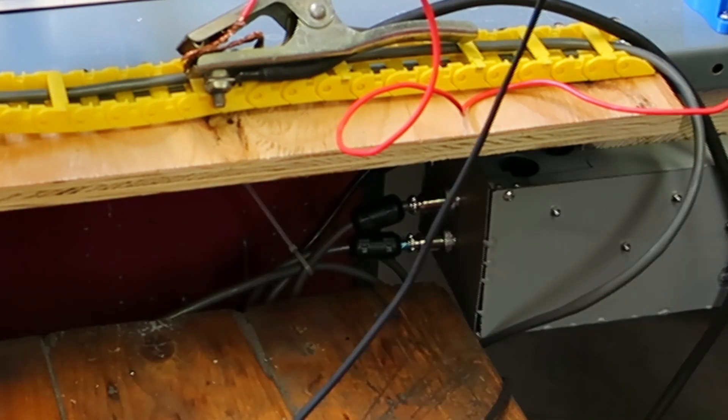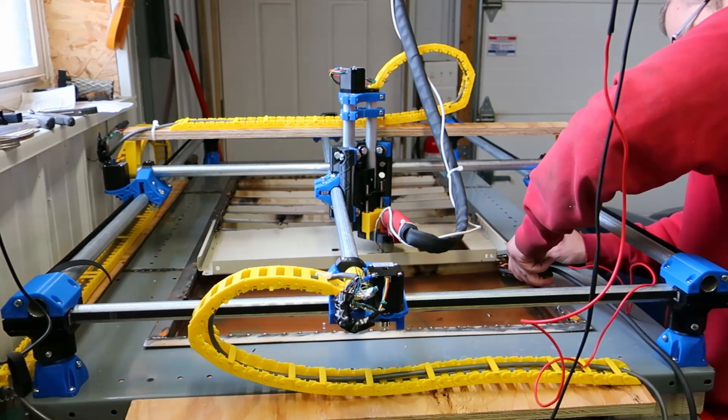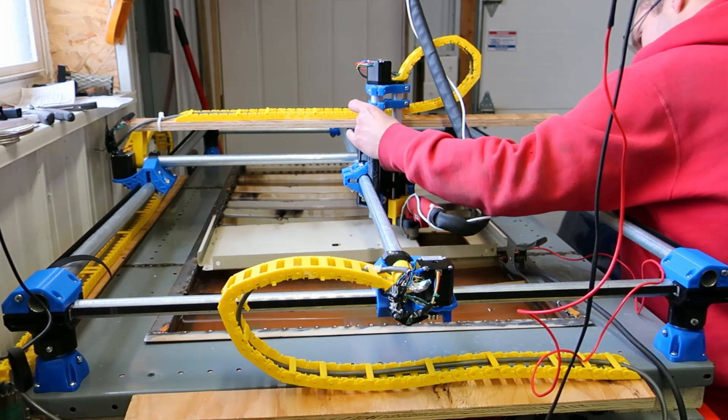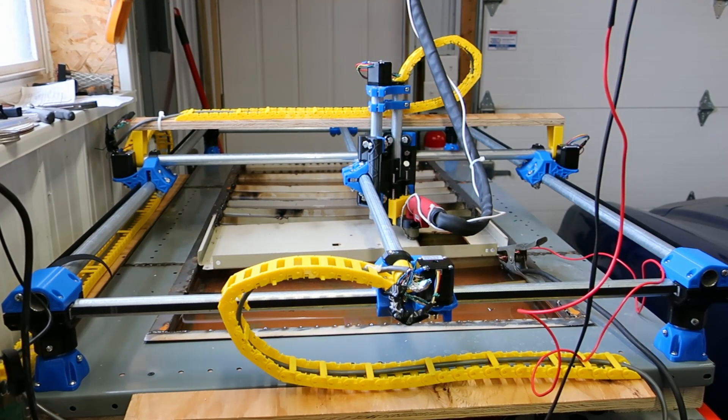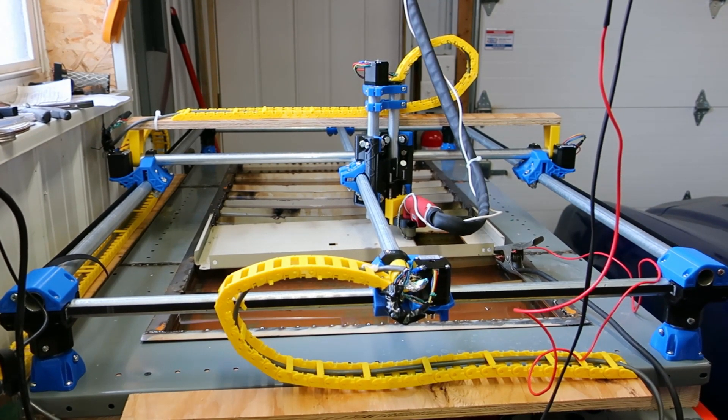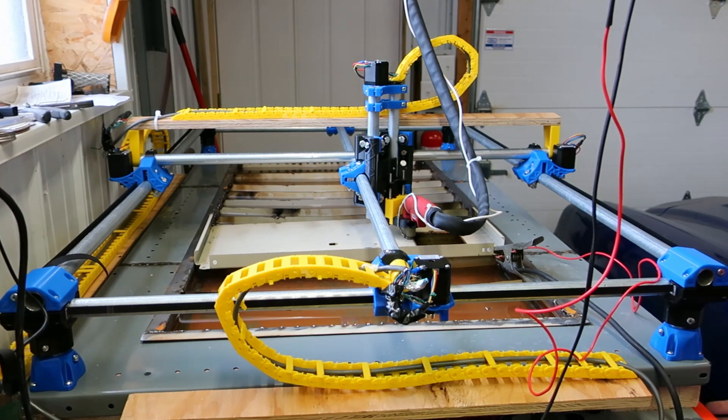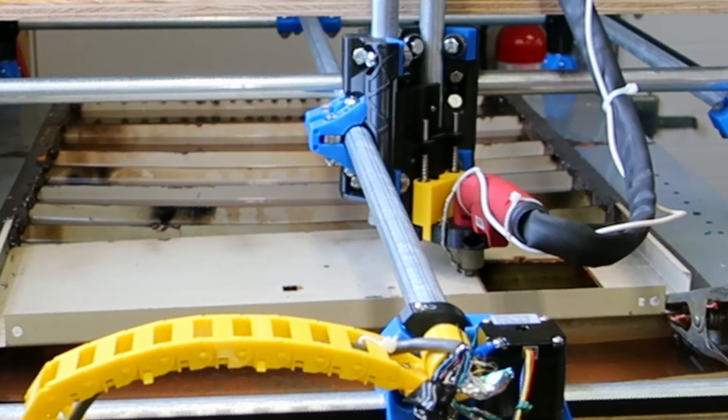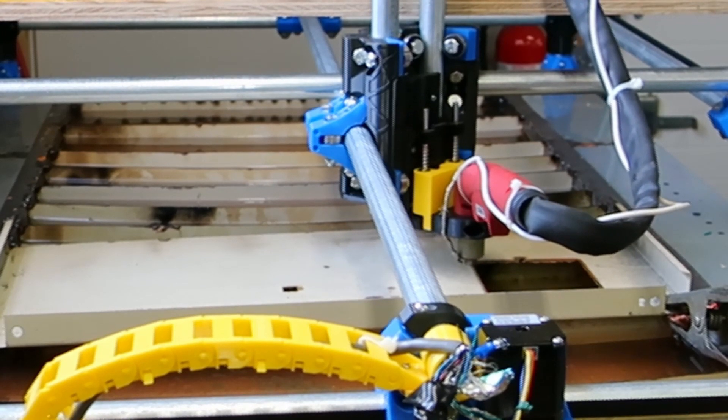So that covers those three. Power the Arduino up. Pick on the plasma cutter. Here goes nothing.